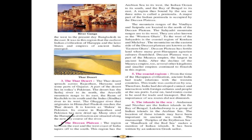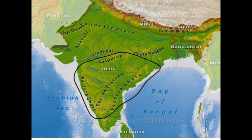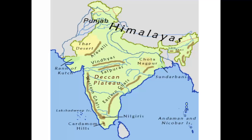The Deccan Plateau is located between the Eastern and Western Ghats. To the east lies the Bay of Bengal, to the west lies the Arabian Sea, and to the south lies the Indian Ocean. The Vindhyas and Satpura mountain ranges lie to the north of the Deccan Plateau. The mountains on the western side are called the Western Ghats, and those on the eastern side are called the Eastern Ghats.